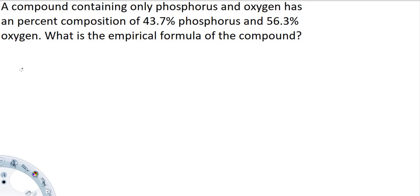To start off, we're going to write out the percentages. Phosphorus is 43.7%. What we're going to do is divide that number by the grams per mole given on the periodic table, and phosphorus is 30.97 grams per mole. When you divide these out, it equals 1.41.